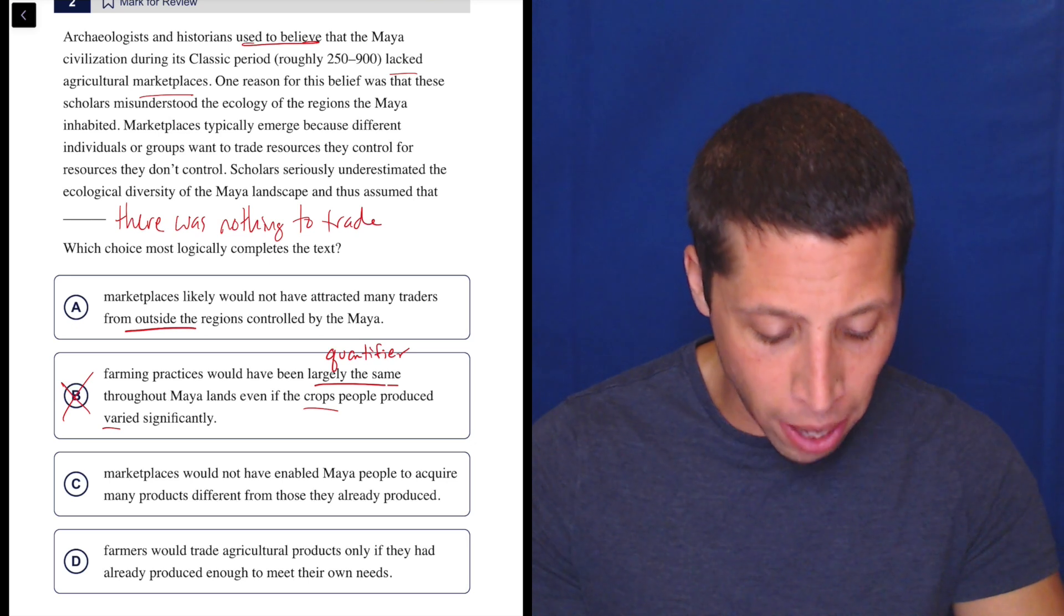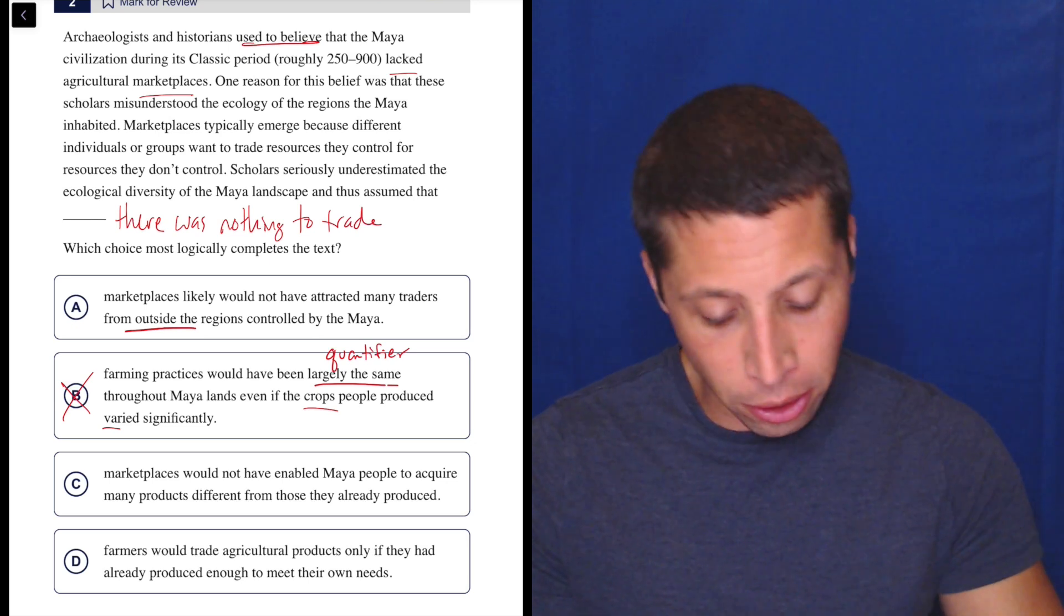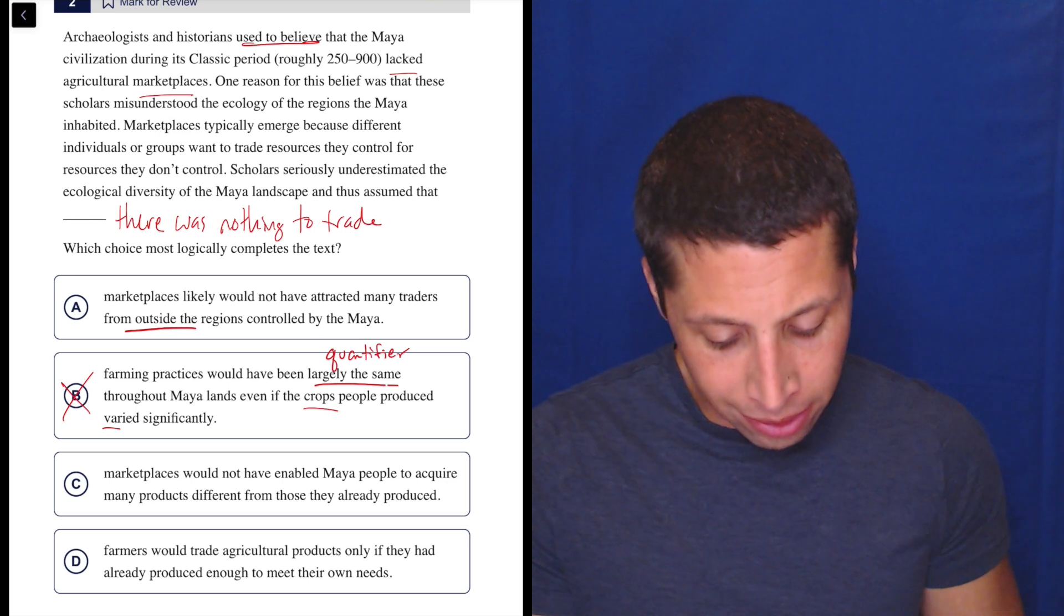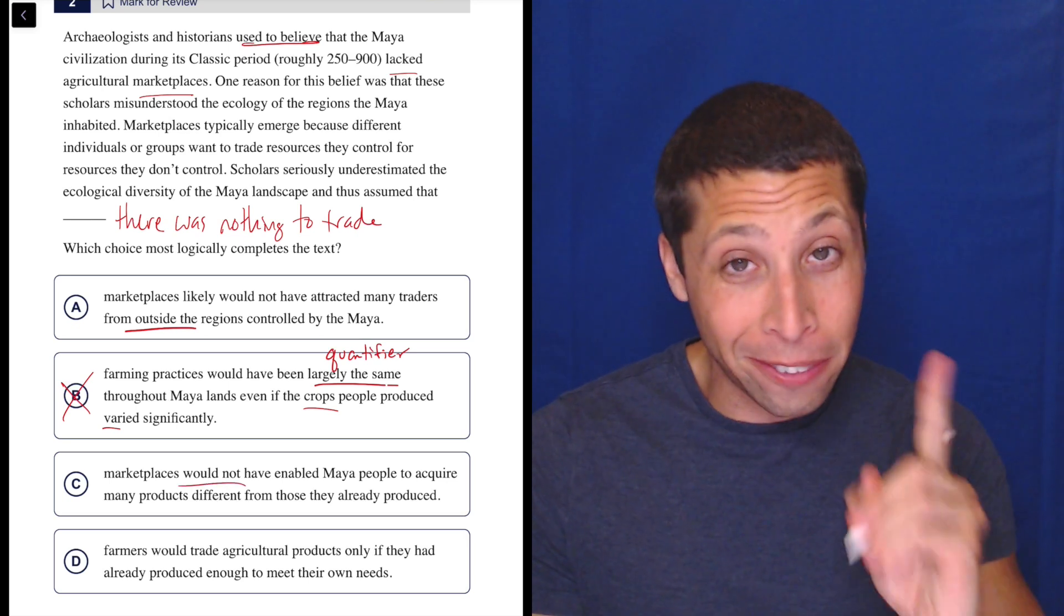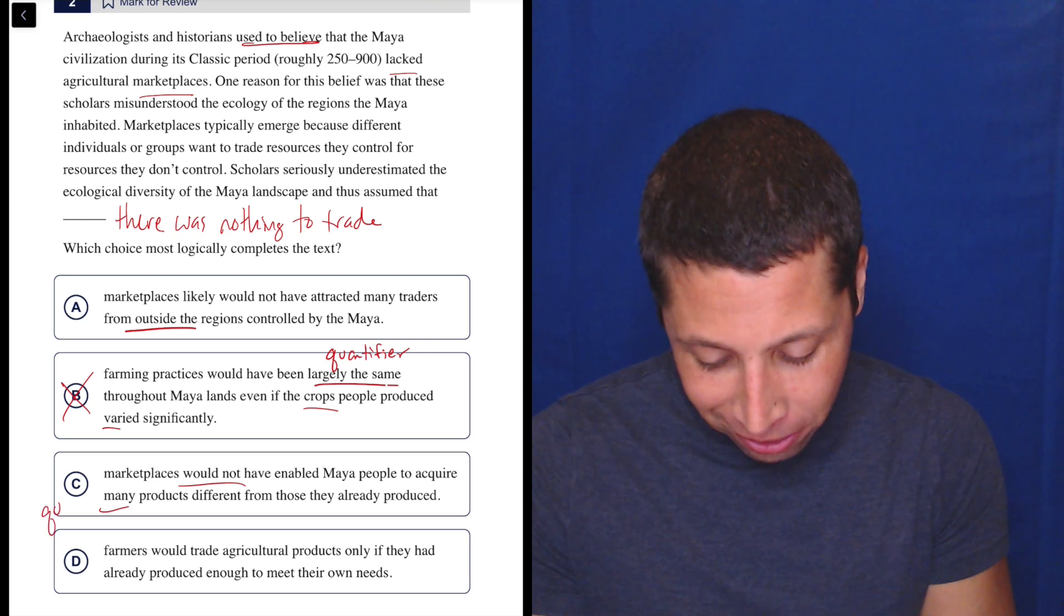C, marketplaces would not have enabled Maya people to acquire many products different from those they already produced. Yeah, because there was nothing to trade. It's kind of annoyingly worded here, but notice that they're talking about number. So I said quantifiers are bad. Here, they're talking about quantifiers, right?